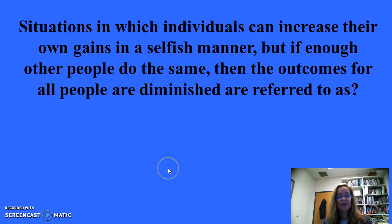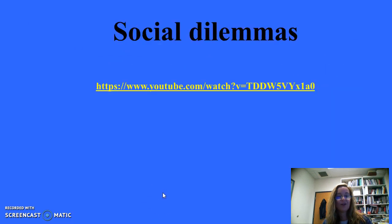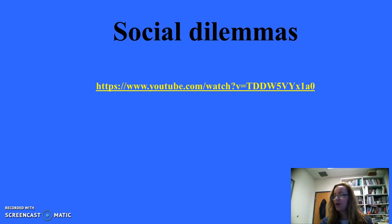For 200: Situations in which individuals can increase their own gains in a selfish manner, but if enough other people do the same the outcomes for all are diminished, are referred to as social dilemmas. The item to archive for module 13 includes an example of the prisoner's dilemma — check it out.